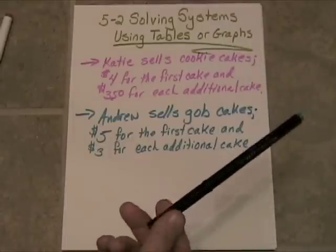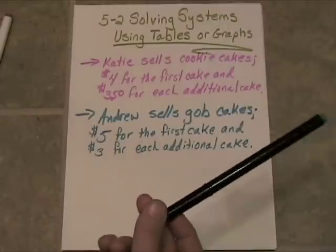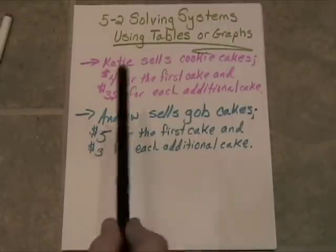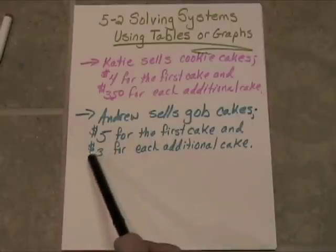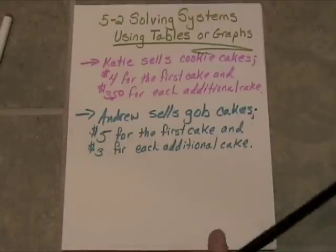and he sells them in pumpkin, banana, and devil's food chocolate. $5 for the first cake, but if you buy more than one, they're only $3 for each additional cake.